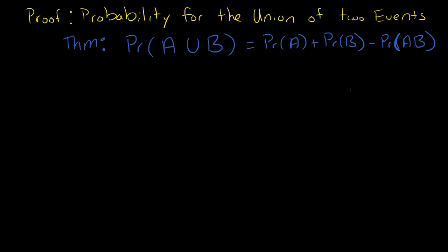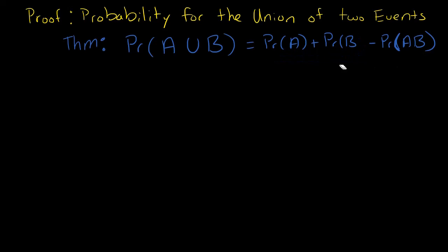A lot of times students will say, 'I thought the probability for the union of two events is just P(A) + P(B). What is that other piece?' Well, if you have disjoint events, then it's just that piece, but whenever you don't have disjoint events — so for any two events — that's when you need to subtract P(AB). And just a notation note: when I say probability of AB, this is the same thing as the probability of A intersection B.